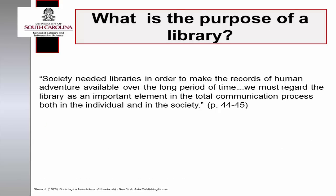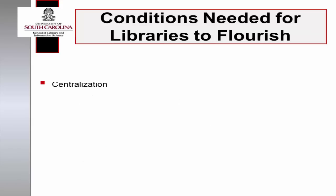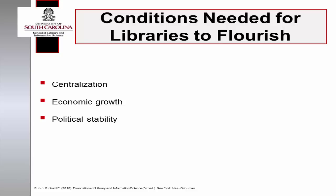Jesse Shera believed that societies needed libraries in order to make the records of human adventure available over long periods of time, and argued that libraries should be regarded as an important element in the communication processes of individuals and societies. Libraries serve more than a custodial function. They hold the capacity to be hubs within the social matrix, reflecting the evidence of the political and ethical nature of a society, as well as serving as a gateway to interconnect the culture of a society. Our text names three factors required for the growth of a library: centralization, economic growth, and political stability, noting that throughout history, libraries have grown and flourished in politically stable, highly populated areas with ample resources of wealth and leisure.